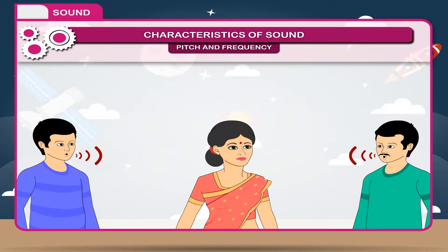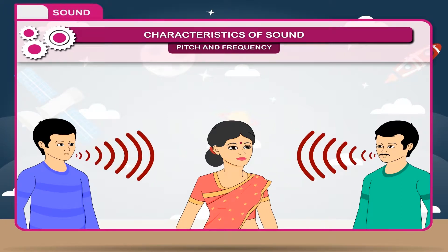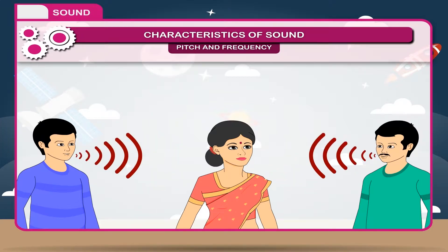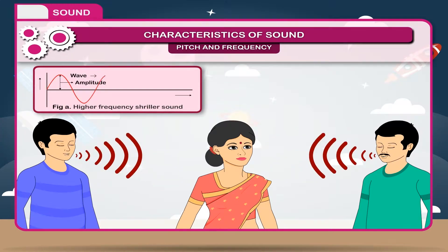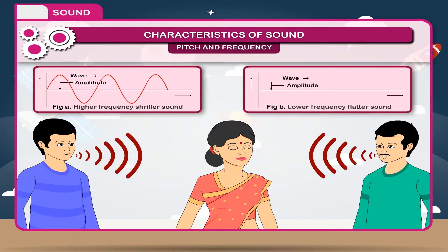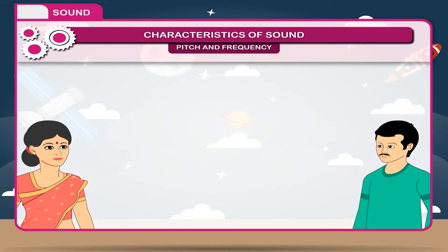Pitch and frequency. Pitch is that characteristic of sound by which we can distinguish between different sounds of the same loudness. It depends on the frequency of vibration. The pitch of sound is directly proportional to its frequency — higher the frequency, higher is the pitch, as shown in figure A; and lower the frequency, lower is the pitch, as shown in figure B.